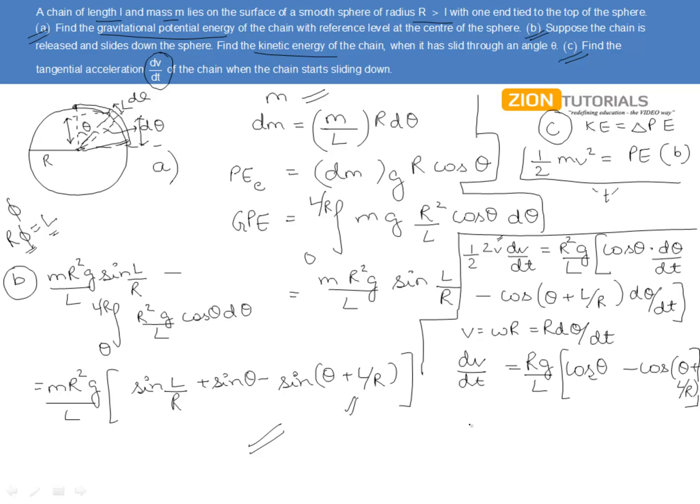Now, when the chain starts slipping, there we have theta equal to 0 in the generalized case. So, we will be putting this theta equal to 0 in the above received equation. So, we will be having the dV by dt which is itself the tangential acceleration equal to R G by L into cos of 0 that is 1 minus cos L by R plus 0 that is cos L by R.